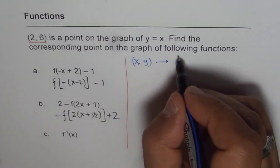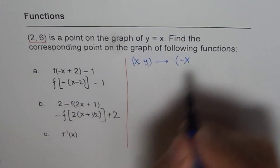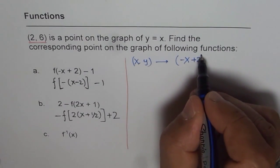x is reflected, so it's 2 multiplied by minus. And then 2 units to the right, so we'll add 2. So that becomes the x value.